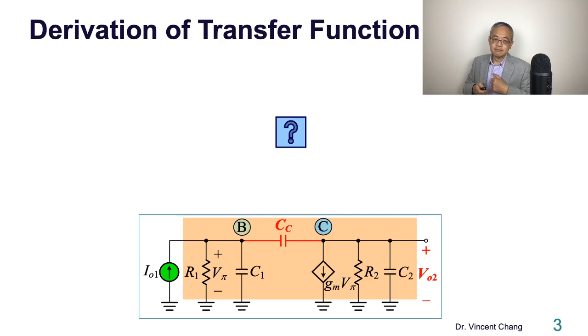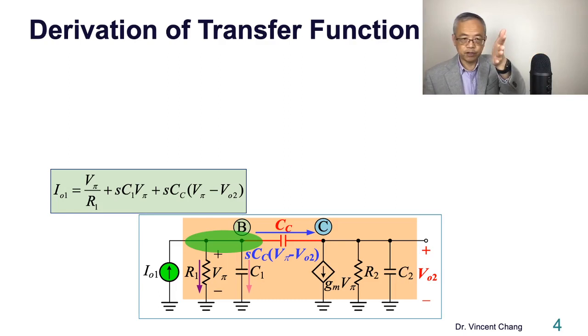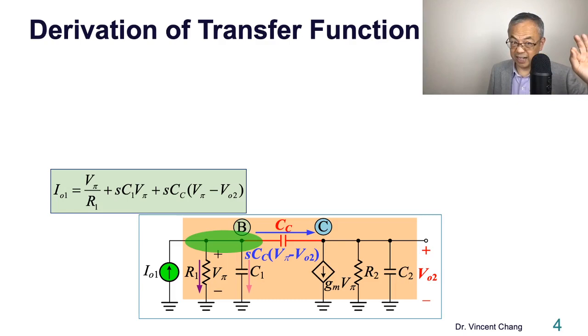Here's what we're going to do. You solve the base node. You see the three currents. The sum of the three currents equals IO1. Why? Because Kirchhoff's current law. The incoming current IO1 equals the purple plus pink plus blue. The incoming current IO1 equals the purple Vπ/R1, pink SC1 times Vπ, and the blue current is the voltage between base and collector divided by one over SCC. This is the first equation.